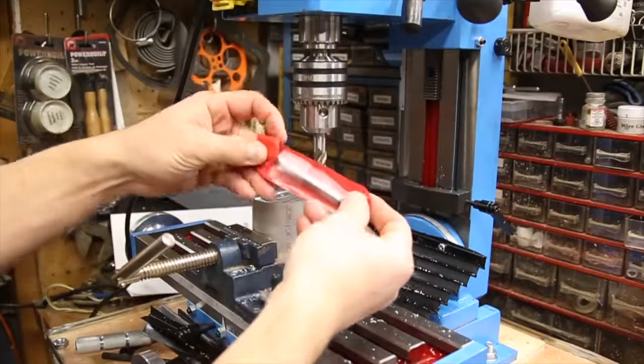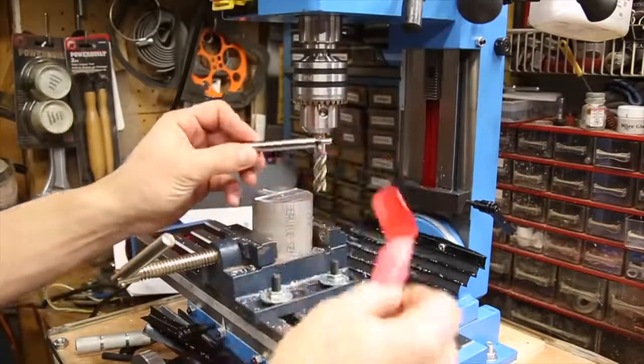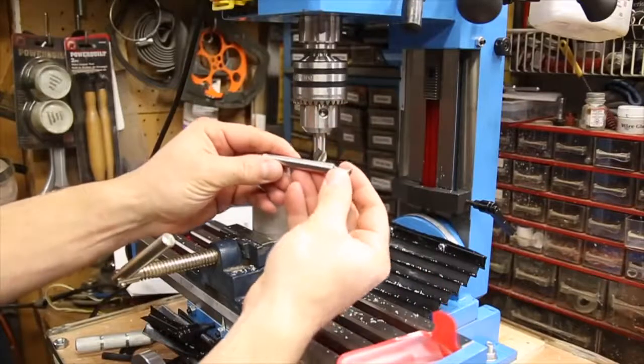I also picked up a double sided edge and center finder for the mill and figured I'd test it out as well. If you're interested, it will also be linked in the description.